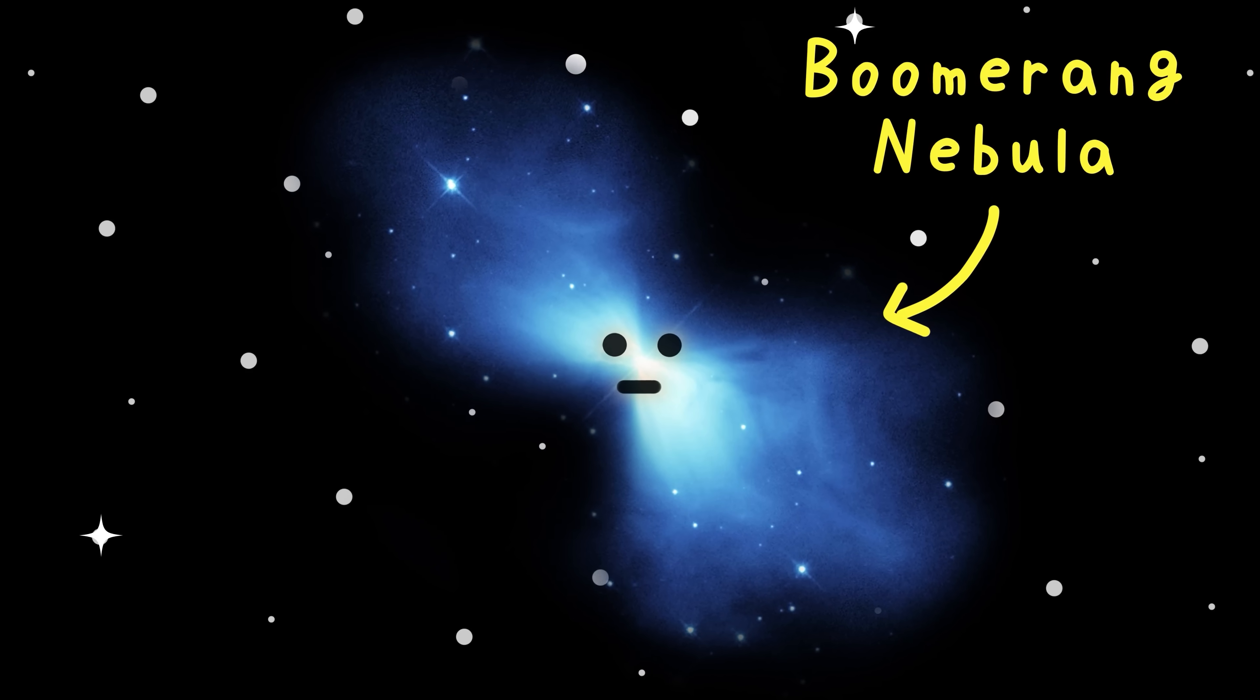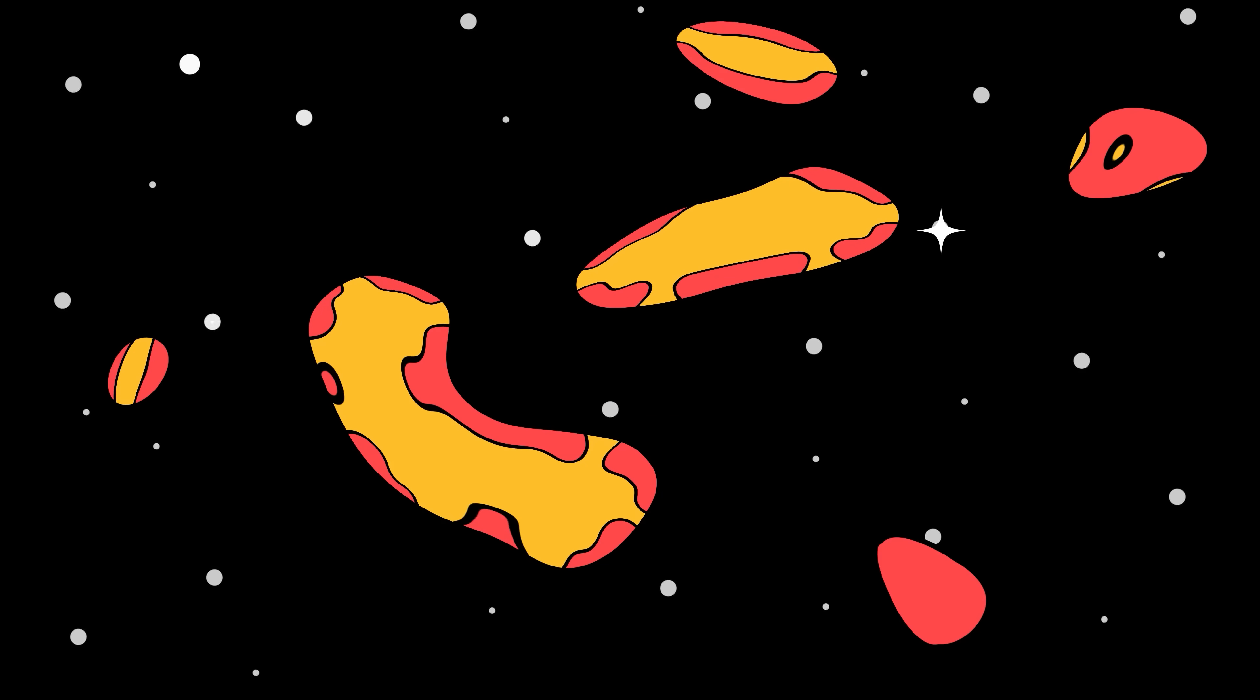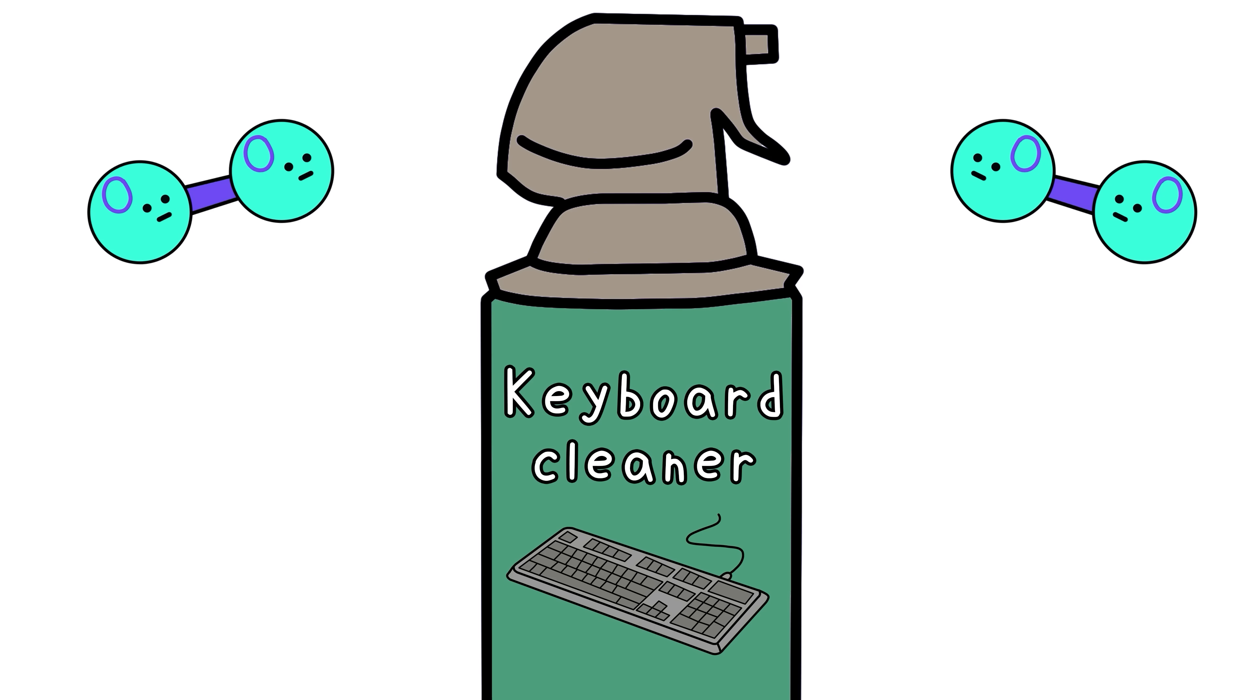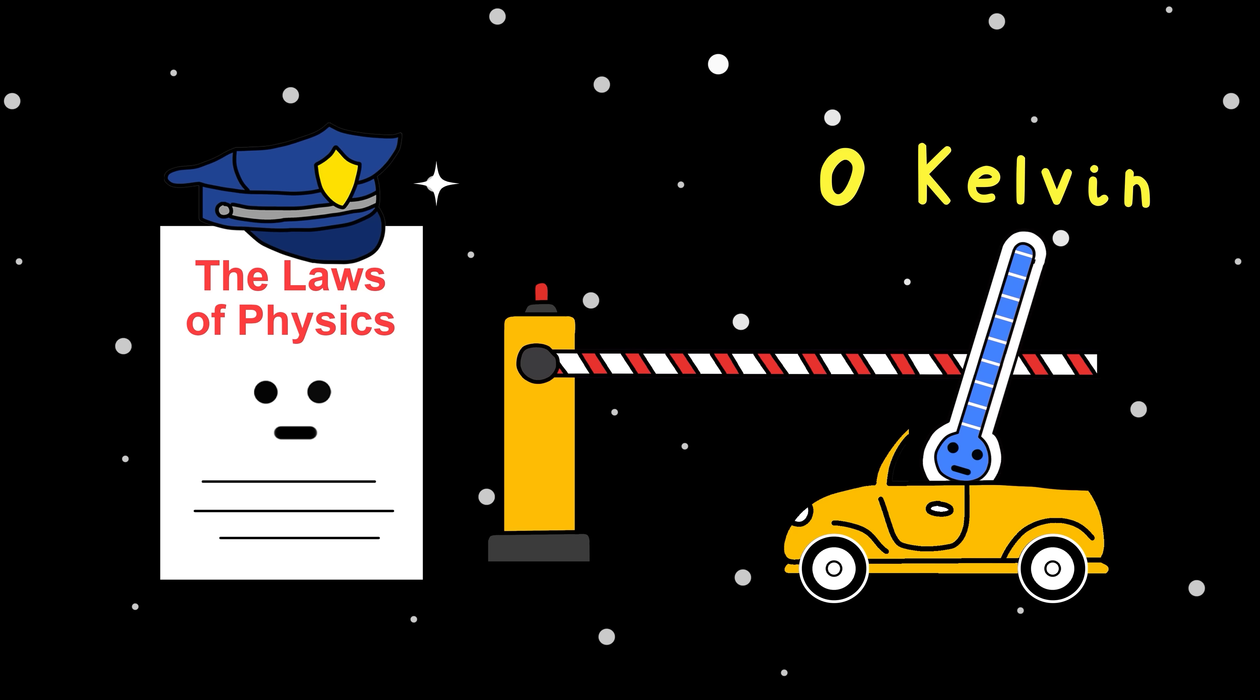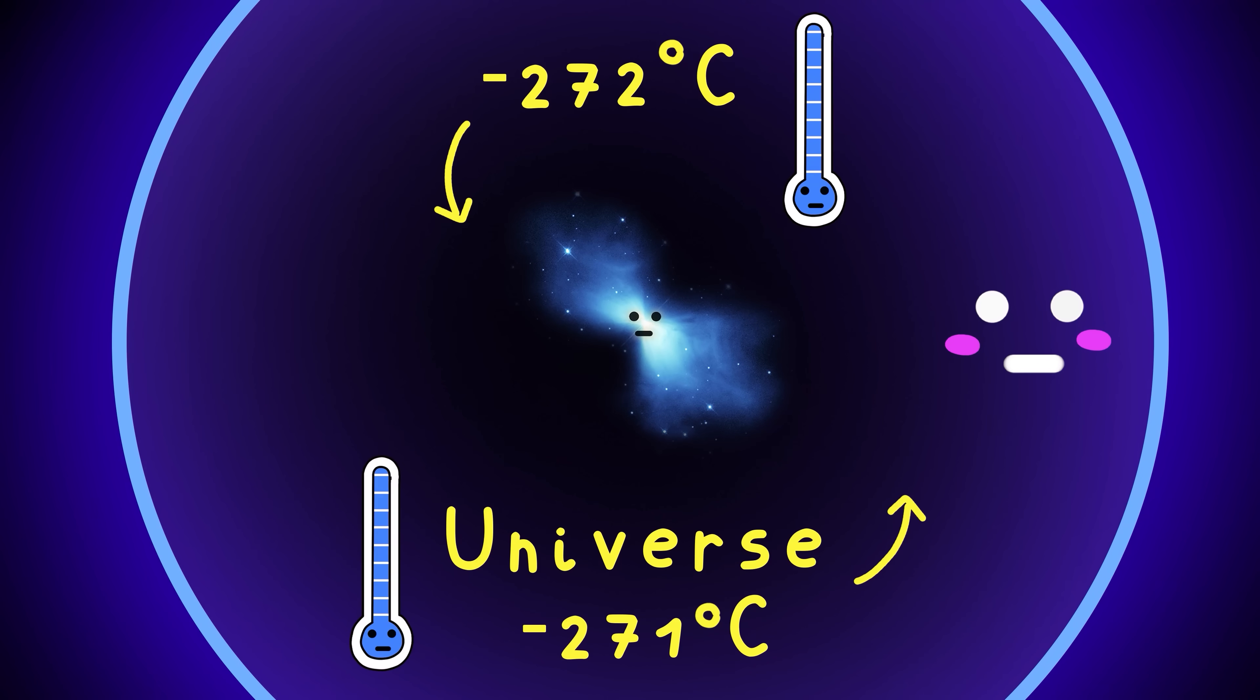An example of this is the Boomerang Nebula. It sits about 5,000 light years away from the sun. And it's so cold it actually dips below the temperature of the universe itself. How? Well, this nebula is formed by a dying star that's ejecting its outer layers at insane speeds. Over 500,000 kilometers per hour. That rapid shedding causes the gas to cool down through something called adiabatic cooling. Basically, all you need to know is it's the same way compressed air in a can feels cold when you spray it to clean your disgusting keyboard. The result? Temperature plunges to just one Kelvin. That's minus 272 degrees Celsius, only a fraction of a degree above absolute zero. The lowest limit physics theoretically allows. That makes the Boomerang Nebula not just colder than interstellar space, but the coldest known natural place in the universe.